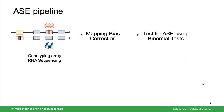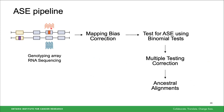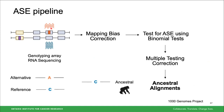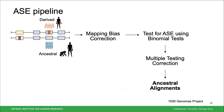Once we've done this, we move on to test for ASE using binomial tests, which test for deviations from 50% using the read counts for each allele at each position. We then correct for multiple testing. Finally, we use ancestral alignment to identify which allele is ancestral — found in chimpanzee, rhesus macaque, and human — and which is derived, found only in humans. This is important for the directionality of ASE; moving forward I'll refer to overexpression or underexpression relative to the derived allele.